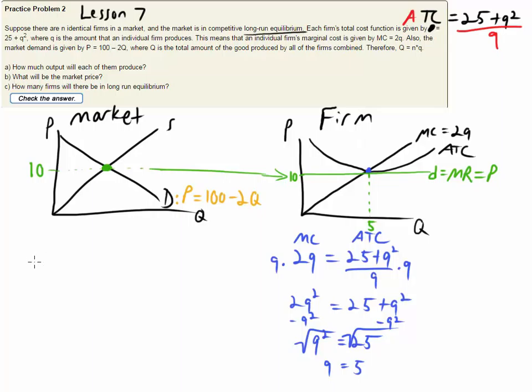We have this demand curve. We know that P equals 100 minus 2Q. We know that P is 10. So, 10 equals 100 minus 2Q. Go ahead and rearrange this. Let's add 2Q to both sides. Subtract 10 and we get 2Q equals 90. So, Q is 45.